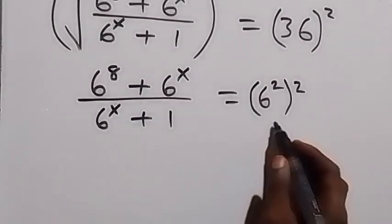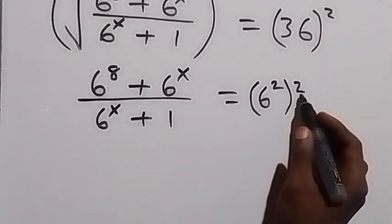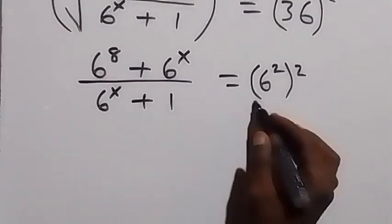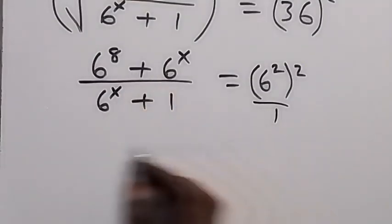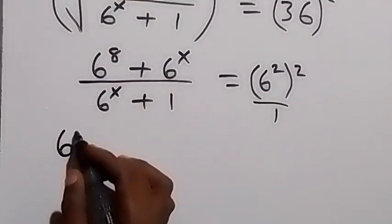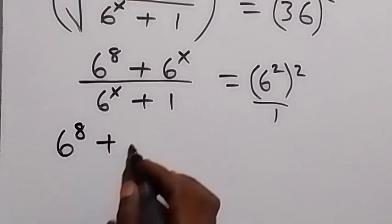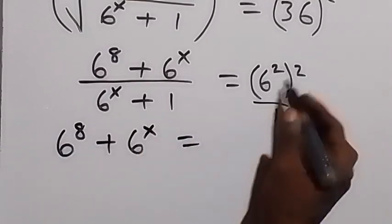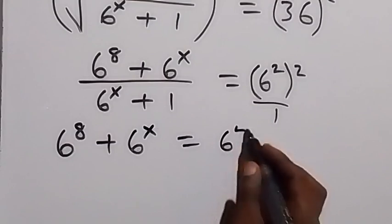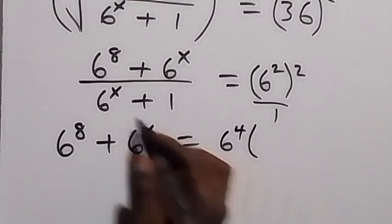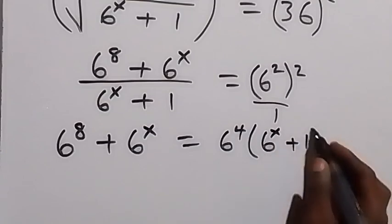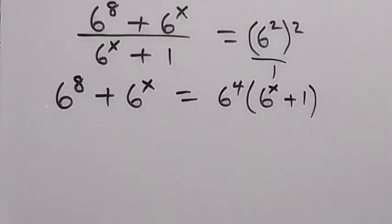We can also multiply the powers, giving 6 raised to power 4. Then when we cross multiply, this becomes 6 raised to power 8 plus 6 raised to power x equals 6 raised to power 4 multiplied by 6 raised to power x plus 1.